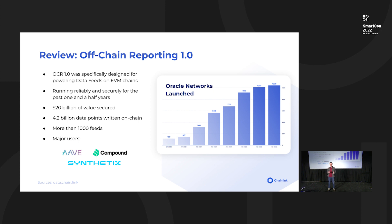OCR 1 has been successful — running very reliably and securely for the past one and a half years. It secures data feeds that protect 20 billion dollars of value according to data.chain.link, and we've written 4.2 billion data points on-chain with more than a thousand feeds launched with OCR 1.